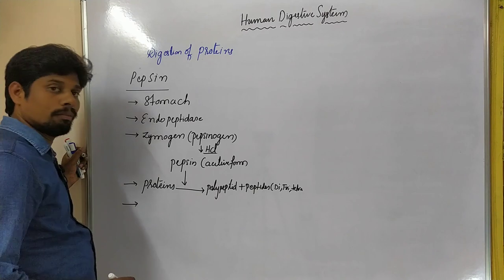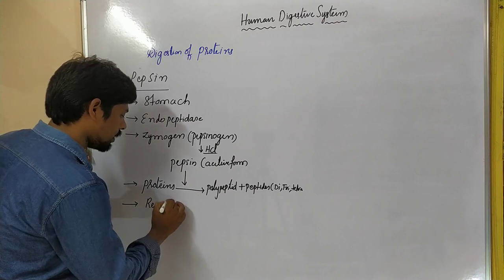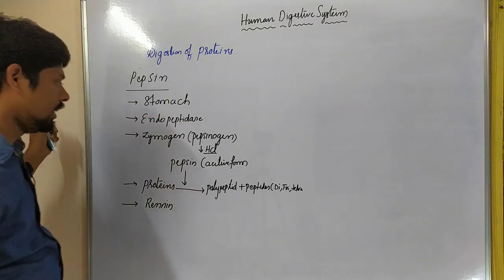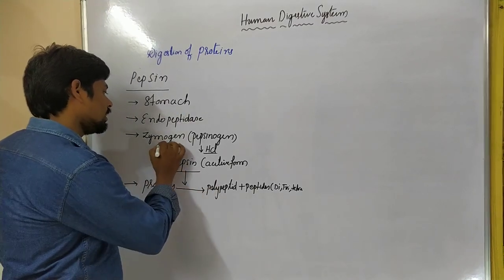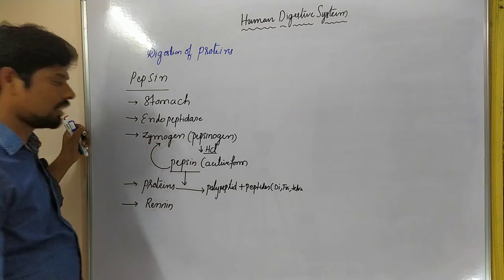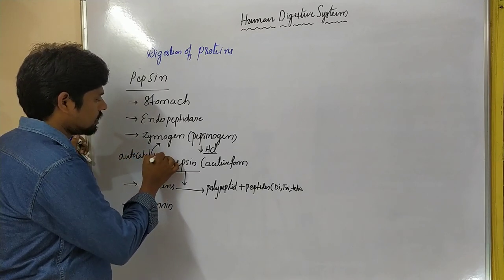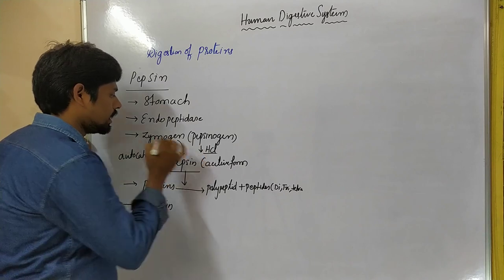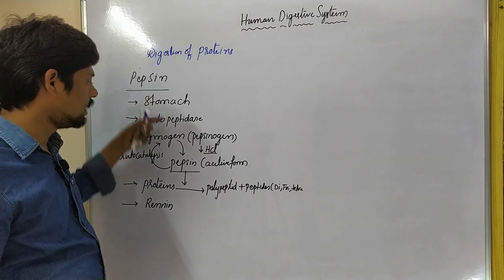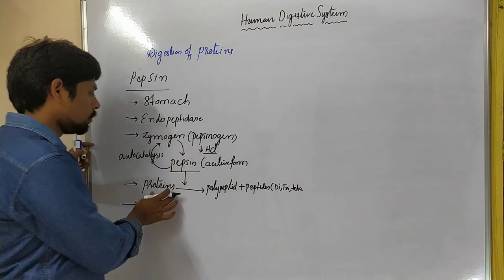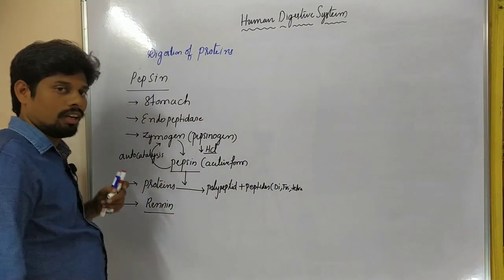Pepsin is also the enzyme which activates another enzyme, rennin. One point to be noted: the initially activated pepsin again acts on pepsinogen — this is called autocatalysis — which produces more pepsin. In this way, an excess amount of pepsin is produced in the stomach. The stomach's excess pepsin acts on proteins and produces polypeptides and peptides, and also activates rennin.